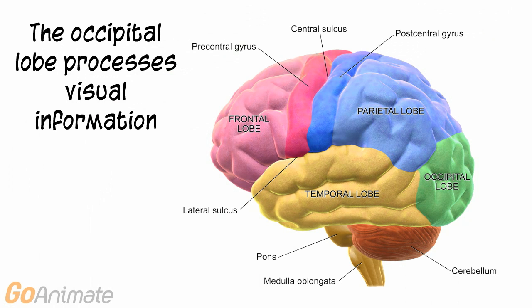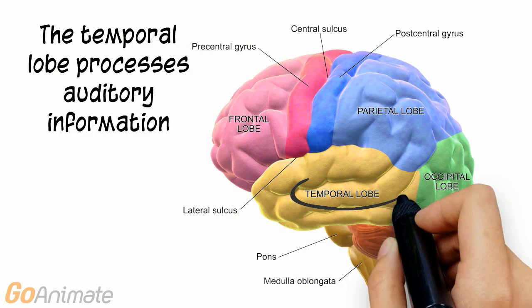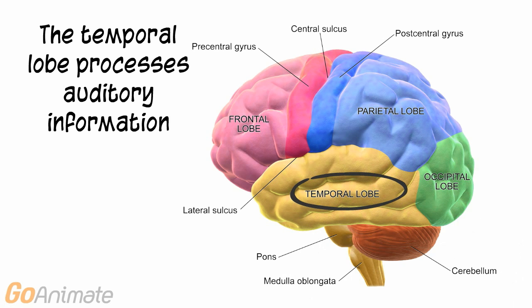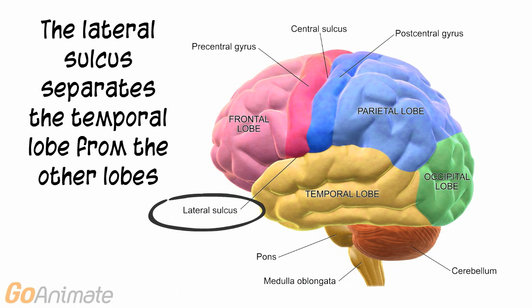The occipital lobe is in the back of the cerebrum and processes visual information. The temporal lobe processes auditory information. The lateral sulcus divides the temporal lobe from the other areas.